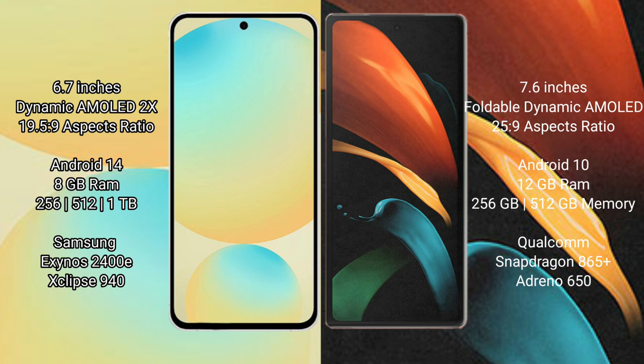Samsung Galaxy S24 FE comes with 8GB RAM and 128GB to 256GB or 512GB internal storage, powered by the Samsung Exynos 2400E Processor. Samsung Galaxy Z Fold 2 comes with 12GB RAM and 256GB or 512GB internal storage, powered by the Qualcomm Snapdragon 865 Plus Processor.